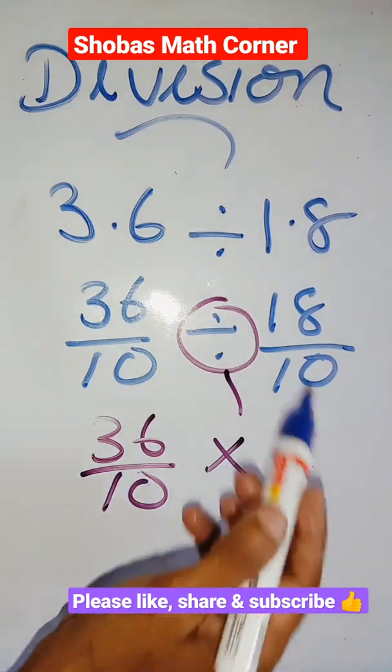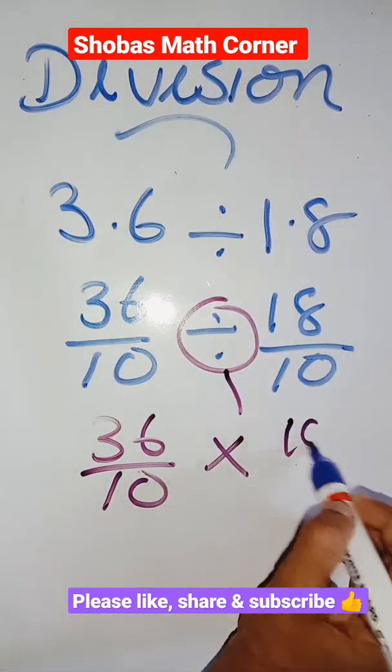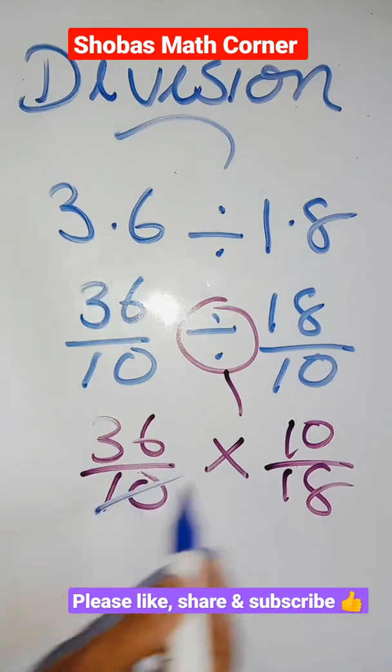Reciprocal means reciprocal is upside down. That is 10 by 18. Then can I cancel this 10 and 10.